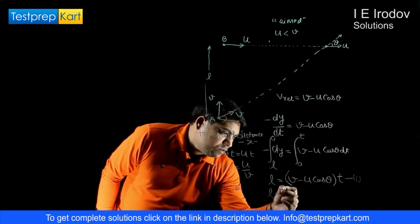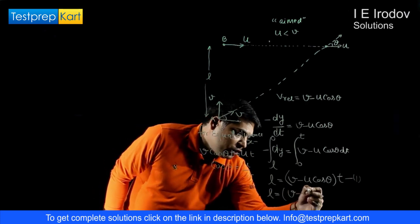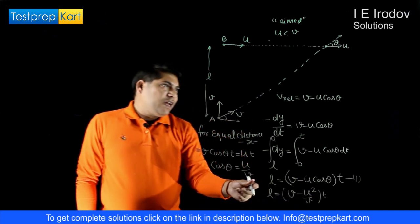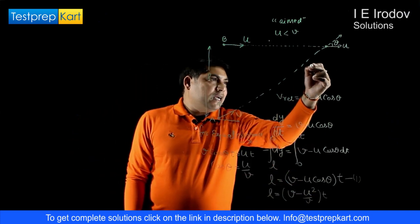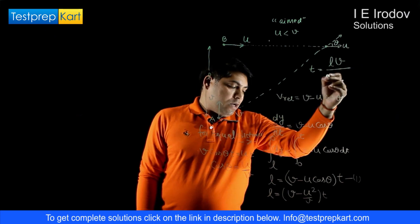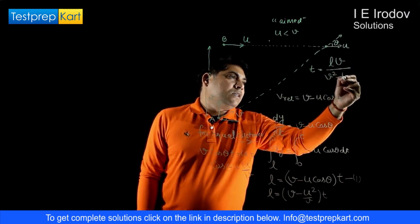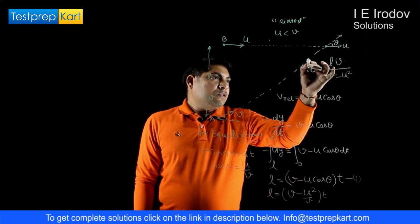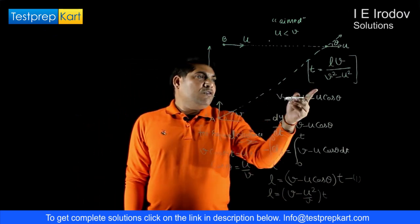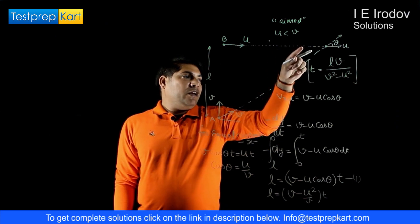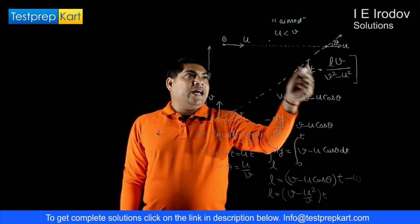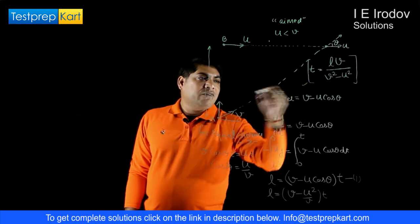Substituting cosθ = u/v into l = (v minus u·cosθ)·t gives: l = (v minus u²/v)·t = (v² minus u²)/v × t. Solving for t: t = lv/(v² minus u²). Note that the denominator is v² minus u², so u must always be less than v. If u equals or exceeds v, this value becomes undefined and the two points will never converge. This is our final answer.